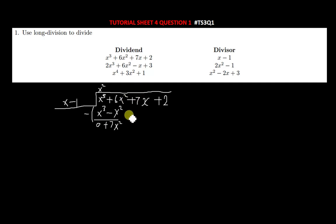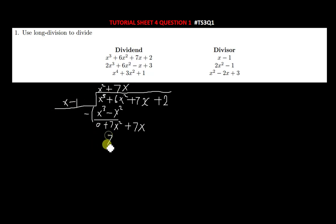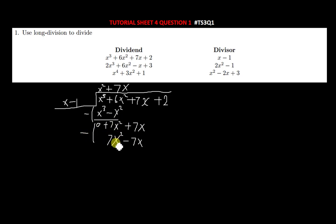You bring down the 7x, so you now have 7x² + 7x. You divide x into 7x², which gives positive 7x. Then multiply: 7x times x gives 7x², and 7x times −1 gives −7x. You subtract: 7x² − 7x² = 0, and 7x − (−7x) gives positive 14x, then bring down the 2.